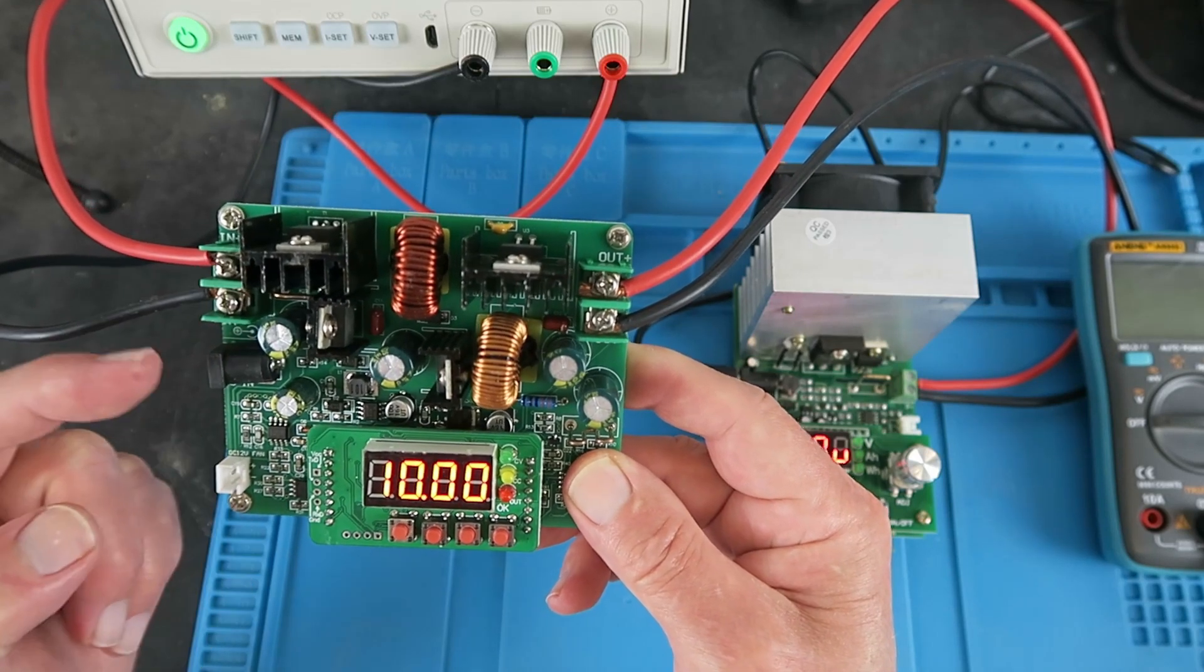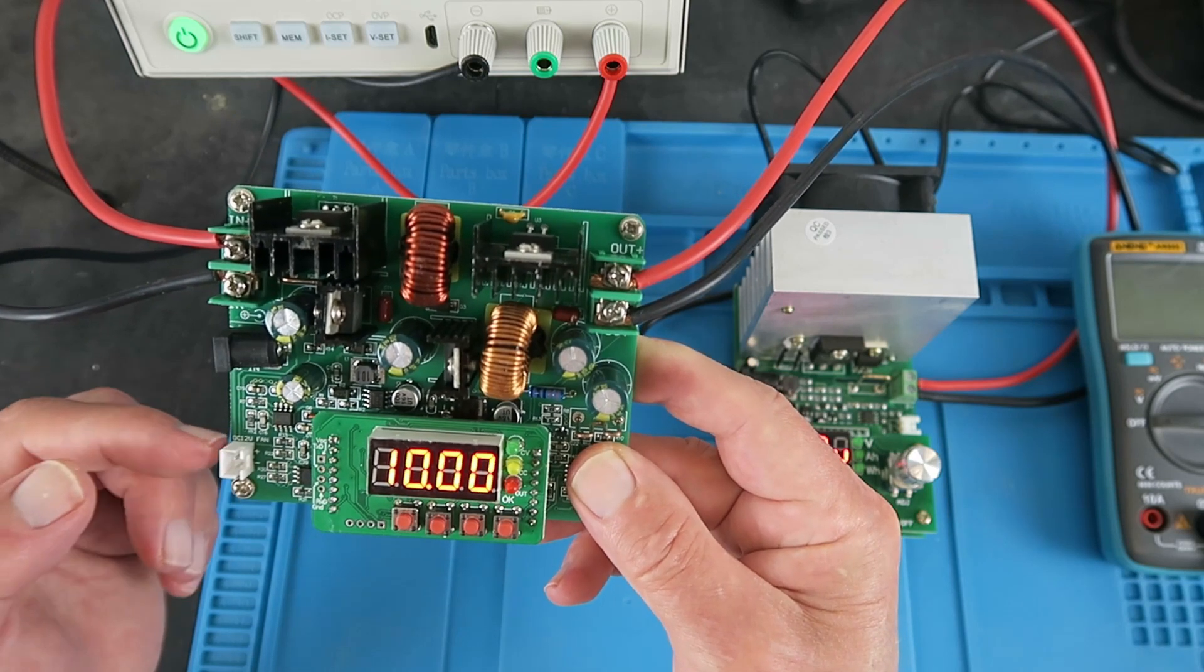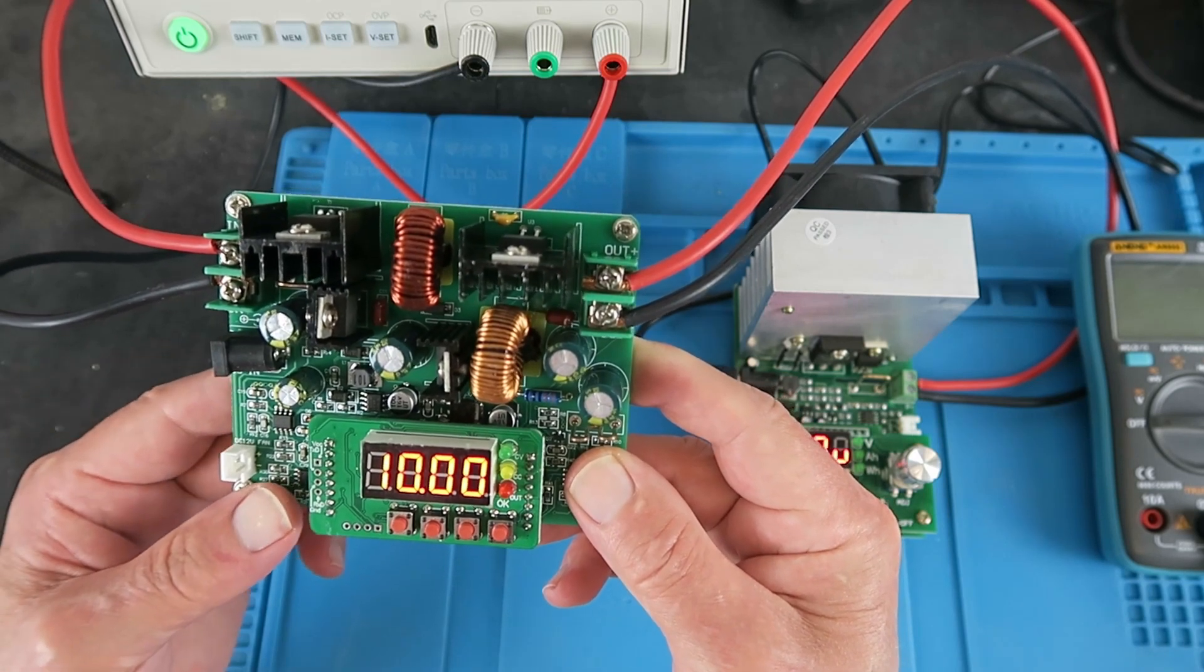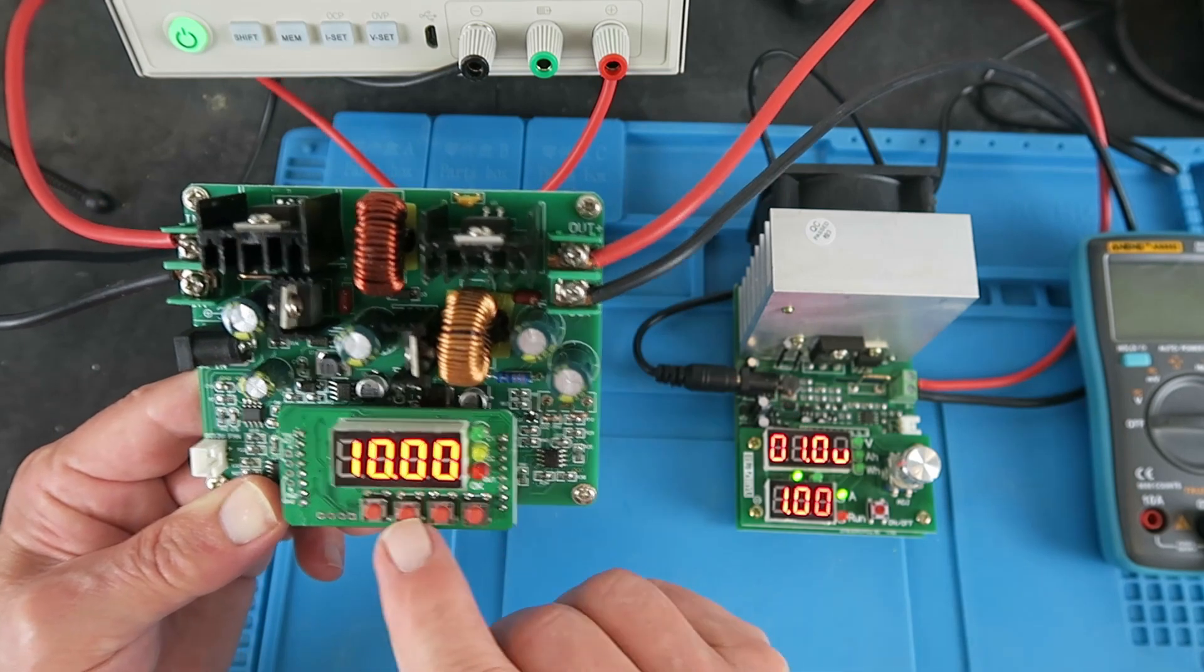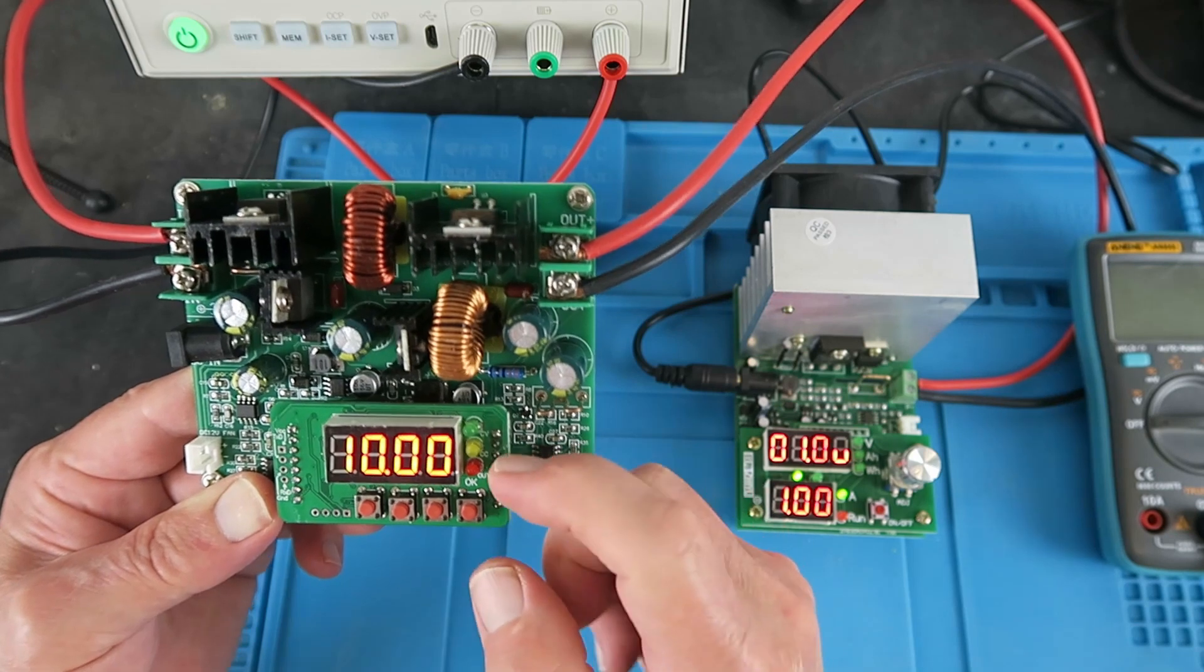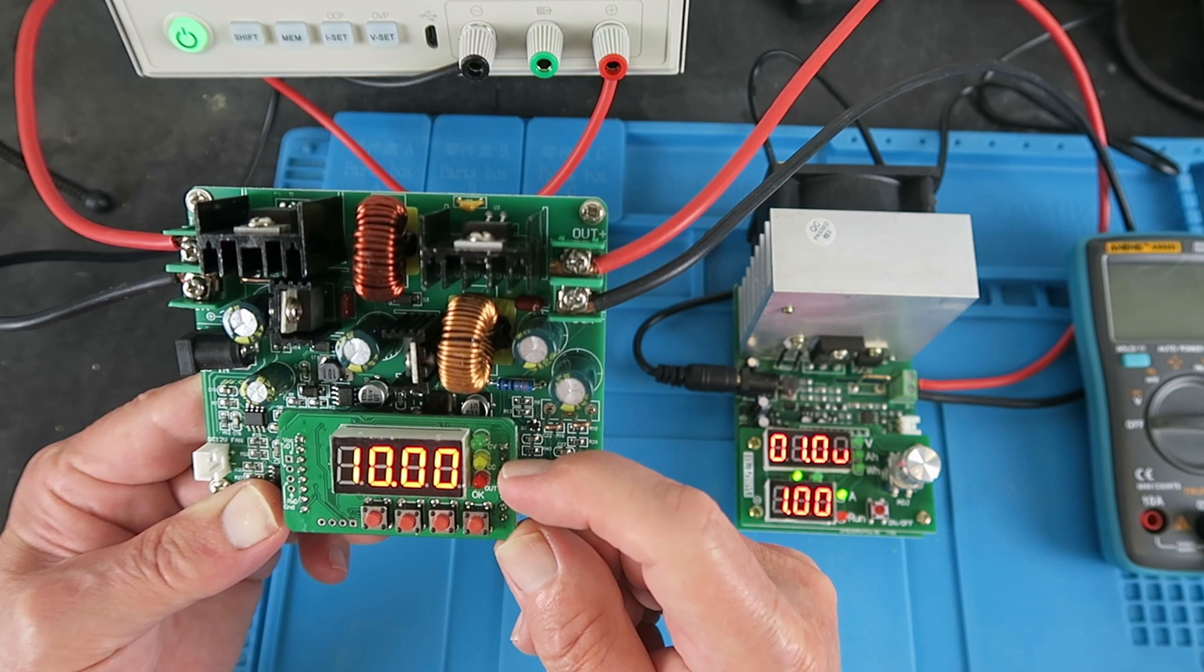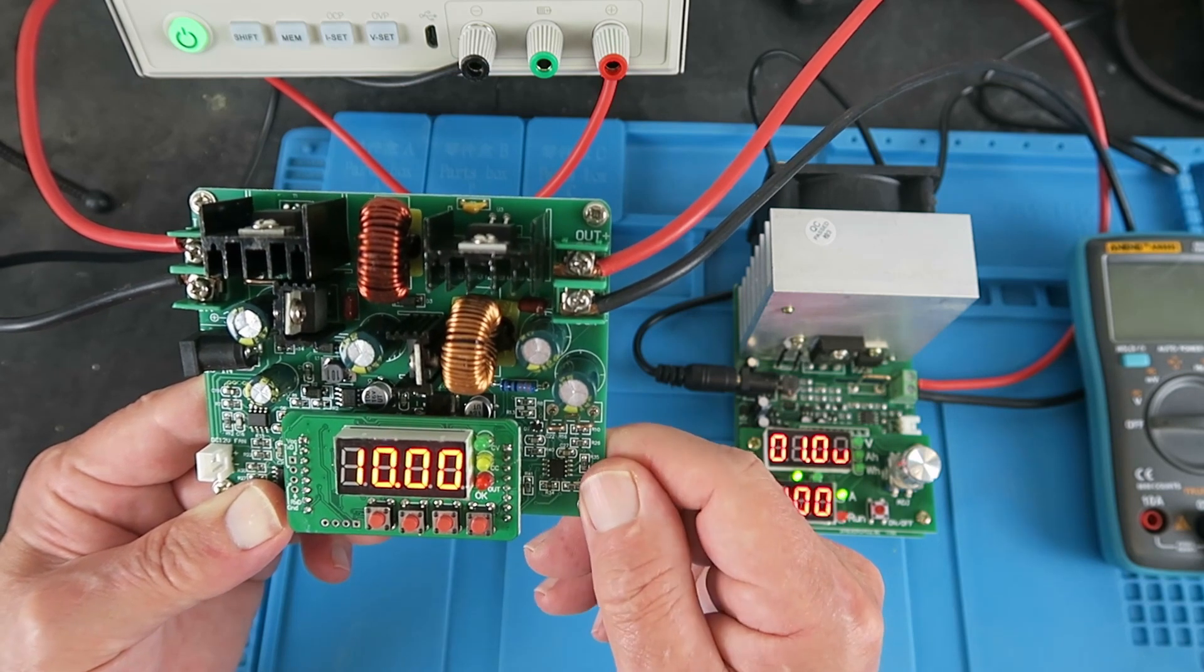You can either use the screw terminals here or the jack - they're in parallel. There's an output here for a 12 volt fan to keep the thing cool. It's controlled by just four buttons here: set, up and down, and OK. There are three indicators to show when it's in constant voltage, constant current, and when the output is on.